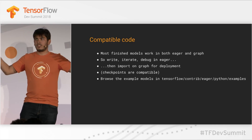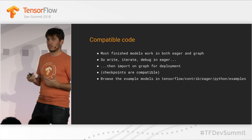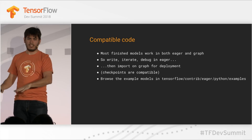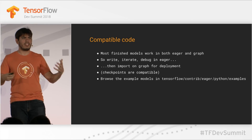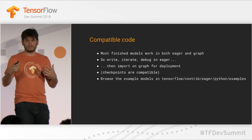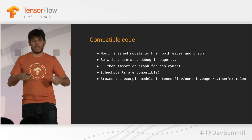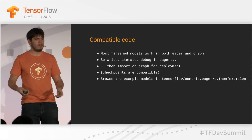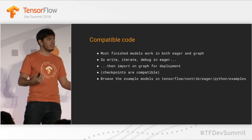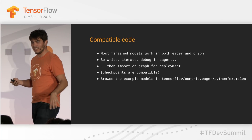Really, the easiest way to get eager and graph compatibility is to write model code that works in both. Once your model is fully written, debugged, and tested, there's not much that tells you whether you need a graph or eager execution. So write, iterate, and debug in eager, then import that same code into a graph, put it in an Estimator, deploy on a TPU pod or GPU, and distribute it. This is what we've done in our example models, and there'll be a link at the end of the presentation.